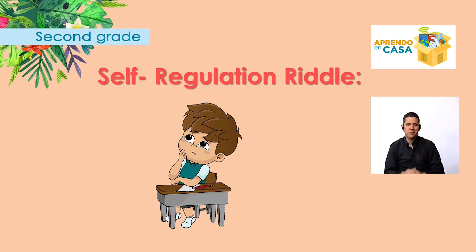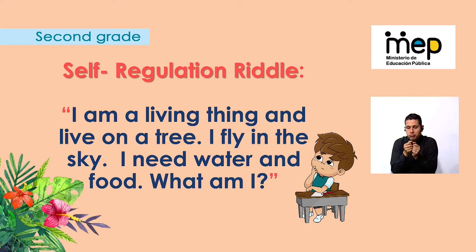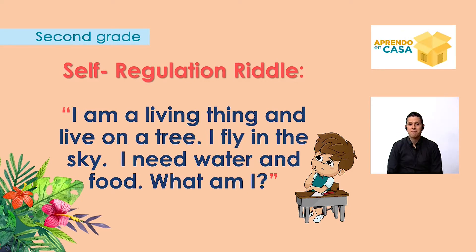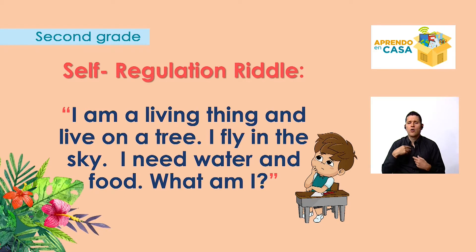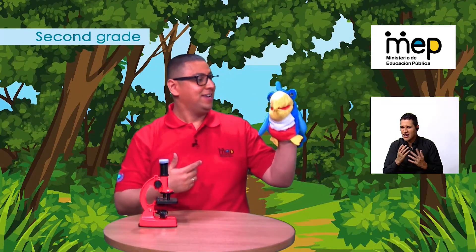We have the self-regulation riddle. Recuerden que este acertijo ustedes le pueden preguntar a sus profesoras o profesores de inglés, familiares, amigos. You can ask your teachers, your family, and your friends — you can even send messages. The riddle goes like this: I am a living thing and live on a tree. I fly in the sky. I need water and food. What am I? We will have the answer at the end of class.